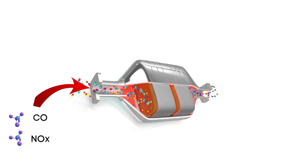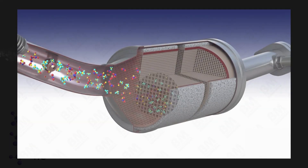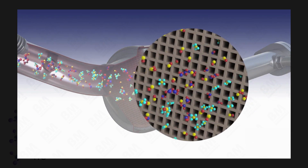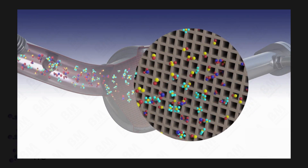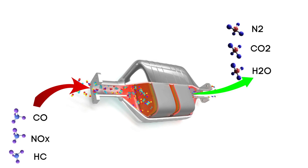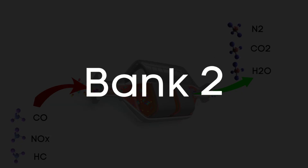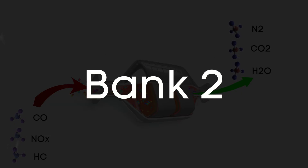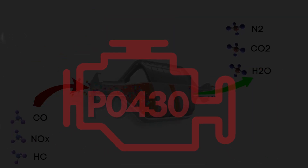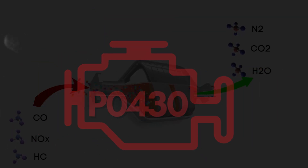When the engine releases harmful gases like carbon monoxide, nitrogen oxides, and hydrocarbons, these gases travel through the catalyst and are converted into safer gases like steam, carbon dioxide, and nitrogen. When the Bank 2 catalytic converter efficiency is below threshold, the ECM flags it as a problem and triggers the P0430 Trouble Code.